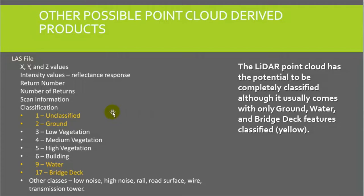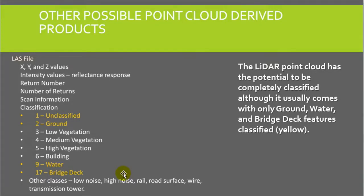Classifications can run a gamut of different kinds of things. Usually, the datasets delivered in most product deliveries only provide an unclassified, a ground, a water, and bridge deck classification. That provides a lot of other surface information that is available in the point cloud and is kind of put into the unclassified area.